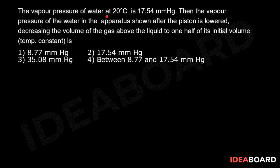The vapor pressure of water at 20 degrees Celsius is 17.54 millimeter Hg. The question asks for the vapor pressure of water in the apparatus shown after the piston is lowered, decreasing the volume of the gas above the liquid to one half of its initial volume.